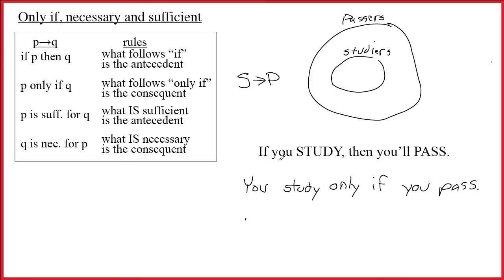But if we think about what these two sentences are supposed to be saying about these sets, the first one's just saying if you're in the studier set, then you're in the passer set. You study only if you pass means that in order to get into the studier set, first of all, you have to be in the passer set. They both have the right relationship to the sets.